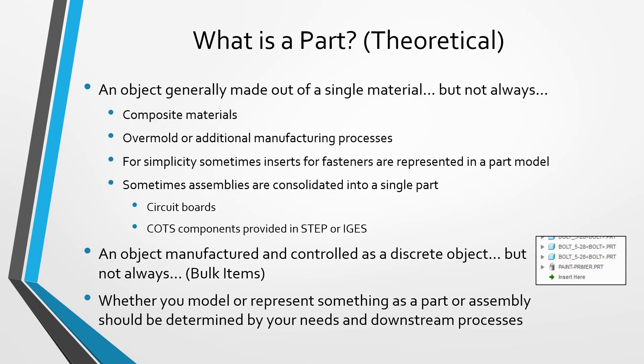Now let's talk about some of the theoretical aspects of a part. Parts are things that are manufactured out of a single material, but that's not always true. Sometimes you will create a part model that's going to be made out of a composite — it could have multiple different materials like a carbon fiber composite. Sometimes a part model will also represent multiple manufacturing processes — for example, you could have a part that is injection molded and then has overmold applied to it.